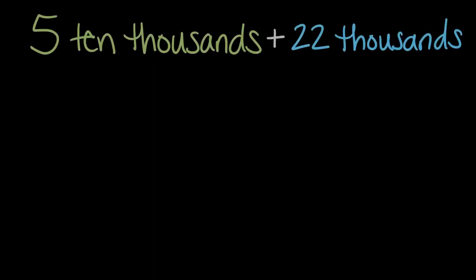Here's one more. We have five ten thousands plus 22 thousands. So two ways, again, we could try to solve this. One, we could think about what are five ten thousands.